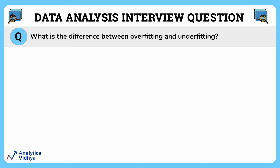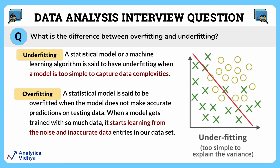This question asks about the differences between underfitting and overfitting. We'll first understand what underfitting and overfitting is. A statistical model or a machine learning algorithm is said to have underfitting when a model is too simple to capture data complexities. Underfitting is like having a tool that's too basic for the job — this tool is too simple and doesn't understand the tricky parts of the job. It won't work well.